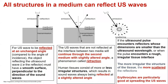The structures in a medium can reflect ultrasound waves. If the ultrasound wave is reflected, the reflected ultrasound wave has an unchanged angle. But if the ultrasound waves are not reflected at the interface between two media, they will continue through the second medium with a slightly altered angle — this phenomenon is called refraction. If the ultrasound pulse encounters reflectors whose dimensions are smaller than the ultrasound wavelengths, or when the pulse encounters a rough irregular tissue interface, they will be scattered.